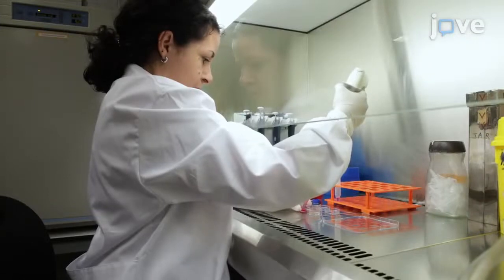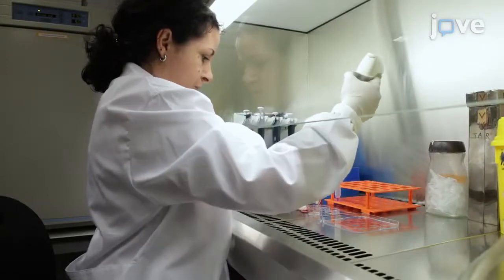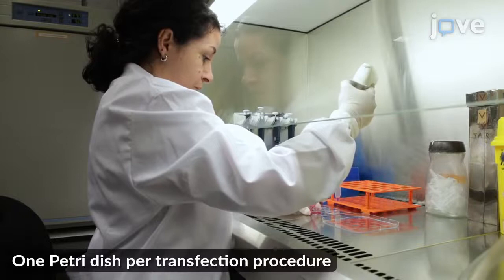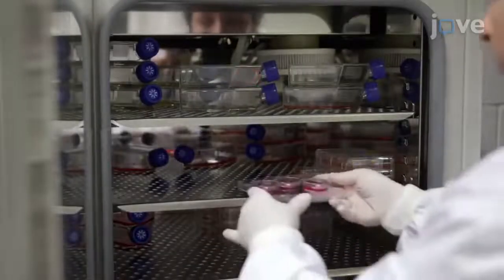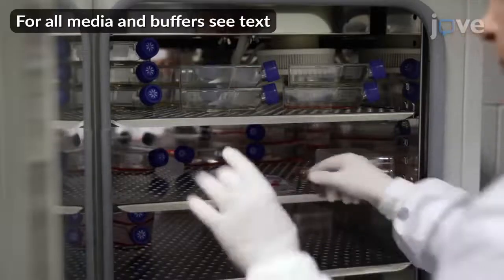To begin, plate 200,000 COS-1 cells into 35 mm Petri dishes and incubate with complete culture medium in a cell culture incubator to reach 70-80% confluency overnight.